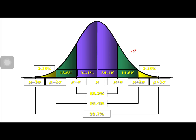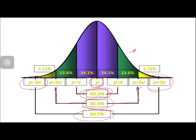To illustrate, on our normal curve, we have our mean in the center. One standard deviation from the mean covers 68.2%. The 95.4% of the data lies from mu minus 2 sigma to mu plus 2 sigma. And 99.7% of the data lies between mu minus 3 sigma and mu plus 3 sigma.